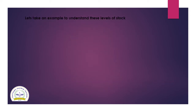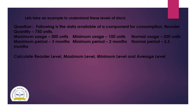Let's take an example to understand these levels of stock. The following data is available for a component: re-order quantity is 750 units, maximum usage is 300 units, minimum usage is 100 units, normal usage is 200 units, maximum period is 3 months, minimum period is 2 months, and normal period is 2.5 months. Calculate re-order level, maximum level, minimum level, and average level.